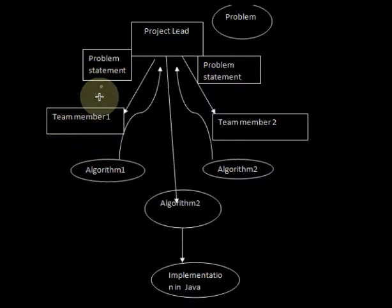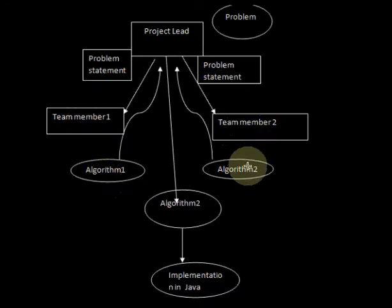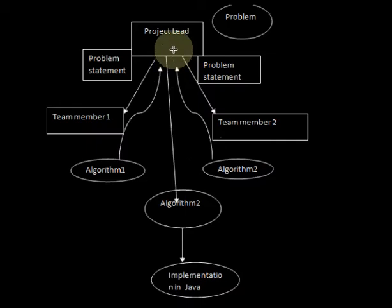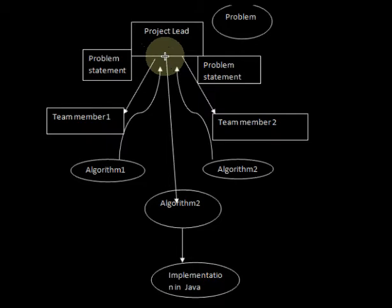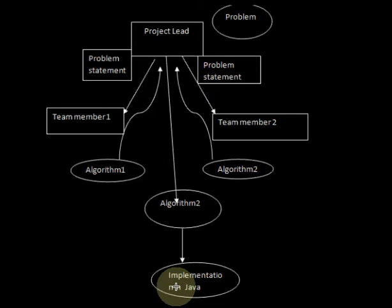Both team members work on the problem statement independently. Since they used their own way of thinking, they came up with different algorithms — team member 1 came up with algorithm 1, and team member 2 came up with algorithm 2. Both algorithms are presented to the project lead, who now has two ways of solving the same problem. He finds that both algorithms are logically correct, and instead of randomly picking one, he should choose the best algorithm for implementation in the required programming language. Here comes the significance of analysis of algorithms.